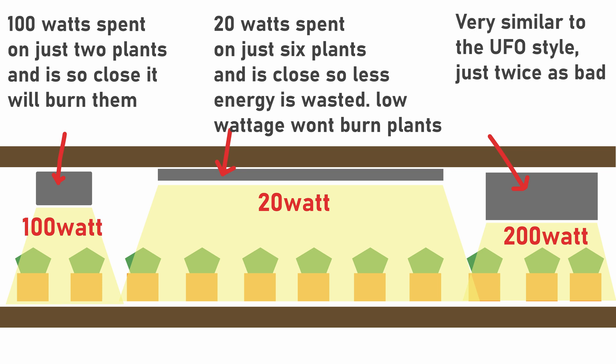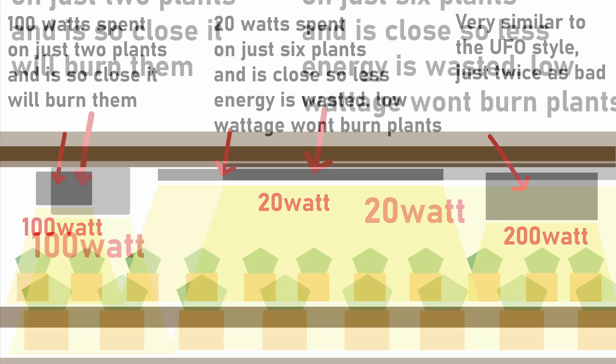Starting on the left you can see if we mounted a little UFO style light or a bulb right underneath there. You can see because it's like a spotlight it only really hits two plants and it's probably way too close for such a high wattage and you'll probably end up burning those two plants.